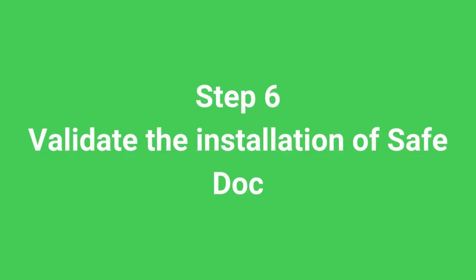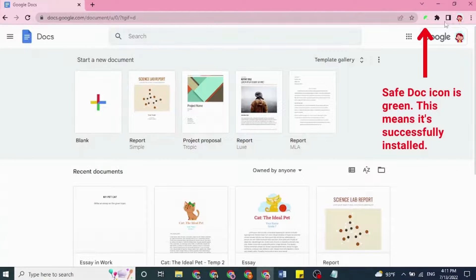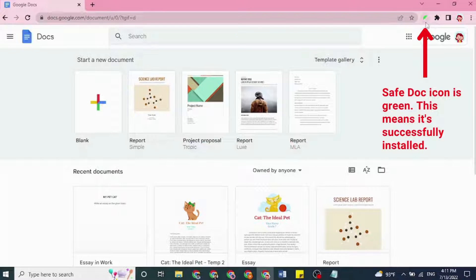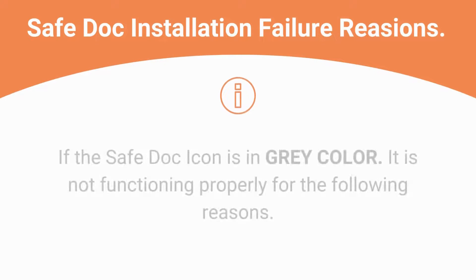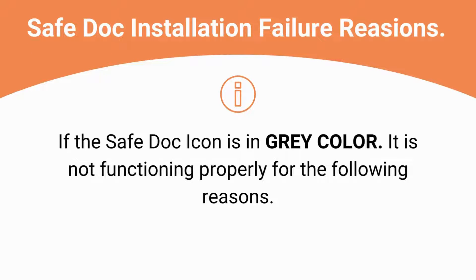Step 6: Validate the installation of SafeDoc. Validate if SafeDoc is force-installed on students' Chrome browsers. Assuming you have the mock user added in the Organization Unit and the account has logged into a Chromebook, open the Chrome browser. In a few seconds, the SafeDoc icon will be displayed in the toolbar in green, meaning the extension is functioning properly. If the icon is gray, it's not functioning properly for the following reasons.